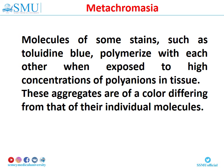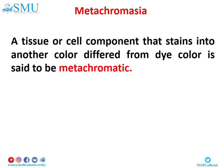Metachromasia: molecules of some stains, such as toluidine blue, polymerize with each other when exposed to high concentrations of polyanions in tissue. These aggregates are of a color differing from that of their individual molecules. For example, toluidine blue stains tissue blue, except for those areas rich in polyanions – such as cartilage matrix and granules of mast cells – which are stained purple. A tissue or cell component that stains into another color differing from the dye color is said to be metachromatic.